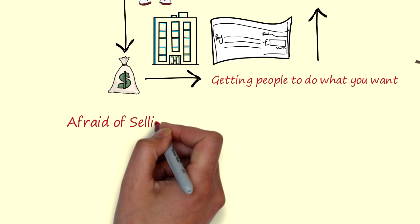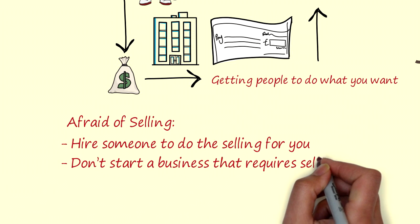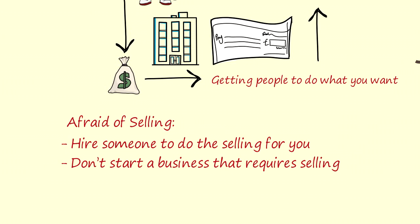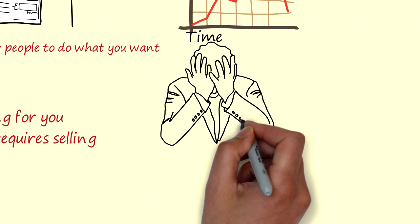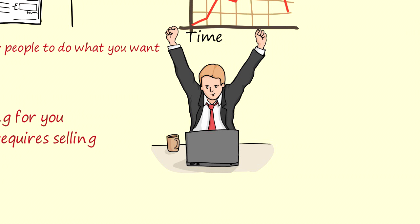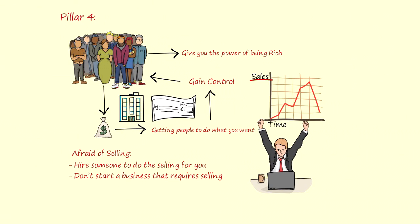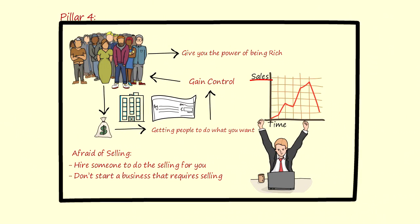If you're afraid of selling, then you have two options: either hire someone to do the selling for you, or don't start a business that requires selling. You can be the biggest failure in the entire world and your business can suck, but if you can sell, you will automatically be successful. If you want to start making money fast, you have to focus solely on the actions that get you paid. Therefore, the fourth pillar of wealth: understand people and focus solely on what gets you paid.